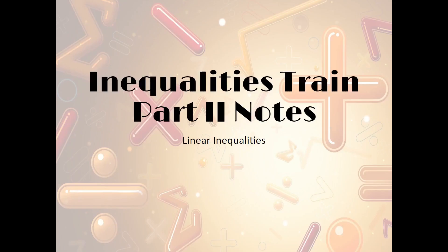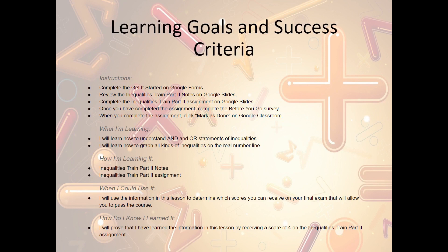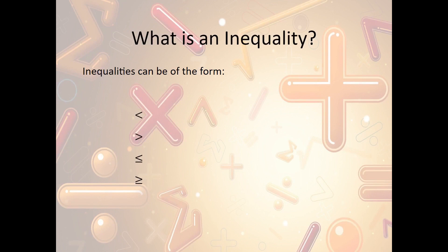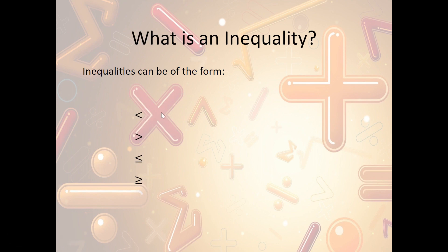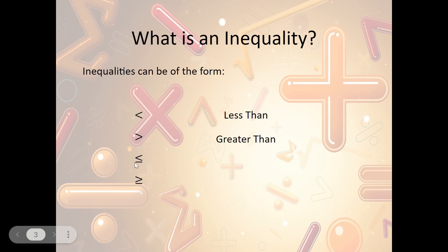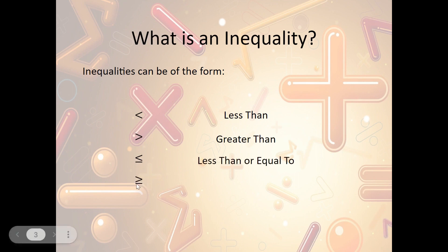Let's take a look at the Inequalities Train Part 2 notes. Our notes begin with the learning goals and success criteria. Now, what is an inequality? An inequality can be of any of these forms. We have the less-than symbol, which looks like an arrow going this direction, the greater-than symbol going the other direction, and then we have the arrows with the little bars underneath. The first symbol means less than, the next means greater than, then less than or equal to — that's the arrow with the bar — and greater than or equal to. So those are the different inequalities.